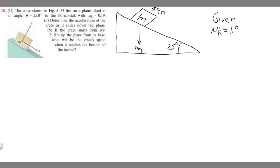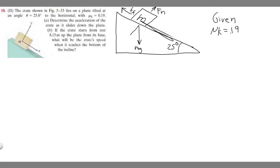We also have a friction force acting up the slope, opposing the motion — making it harder to slide down. Since we've defined x along the slope and y perpendicular, we need to split the weight force mg into x and y components. The y component is along the y-axis and the x component is along the slope.